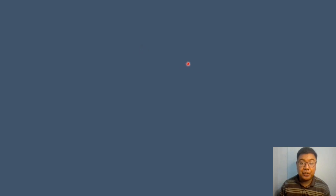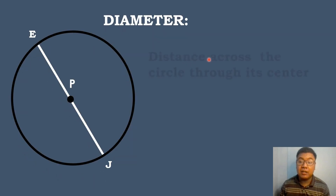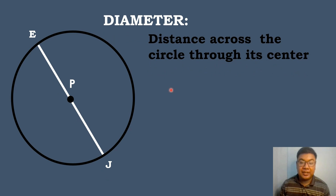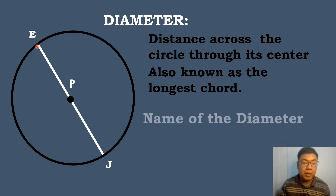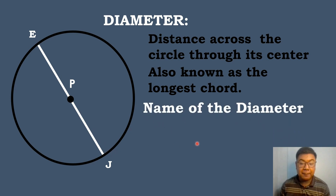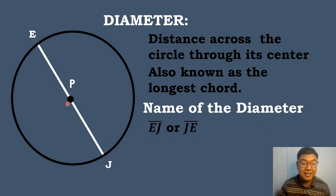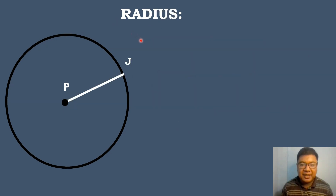The next part of the circle is the diameter. The diameter is the distance across the circle through its center. It is also known as the longest chord. The name of the diameter in the circle is segment EJ or segment JE, which passes through the center of the circle, which is point B.